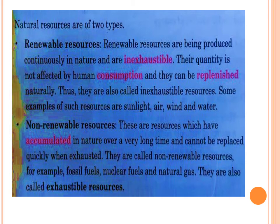Natural resources are of two types. Renewable resources are being produced continuously in nature and are inexhaustible — they cannot be exhausted fully. Their quantity is not affected by human consumption. They can be replenished naturally, meaning they will be produced continuously in nature. Renewable resources are also called inexhaustible resources. Examples are sunlight, air, wind and water — they are not going to end.